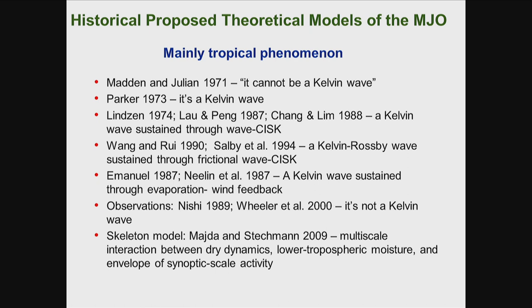Here is a list of historically proposed theoretical models for the MJO generation. This slide is mainly for those theories that look at the MJO as mainly a tropical phenomenon. For example, the first paper by Madden and Julian, 1971 — they looked at this oscillation and said in the paper it cannot be a Kelvin wave. So it's not a Kelvin wave; it's different.